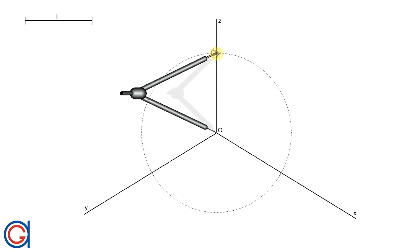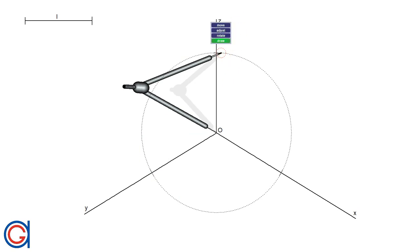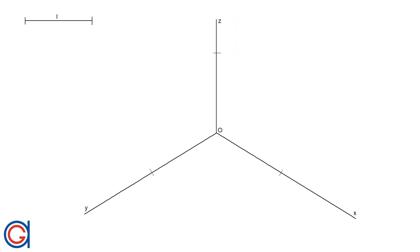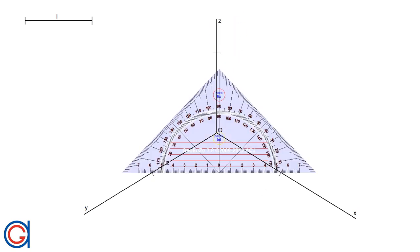Now where the compass has cut the x and y axis we are going to join these marks with a horizontal line as can be seen here.